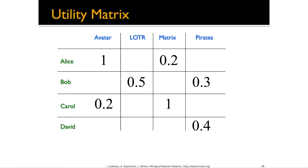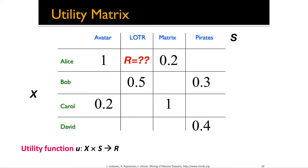The matrix is incomplete, and what we want the utility function to do is infer ratings for each empty cell. How likely is it that Alice would give a high rating to Lord of the Rings? What rating would she give to Pirates of the Caribbean? What function can we construct from the existing ratings to infer new ratings for content people haven't seen before?